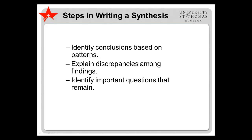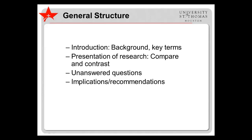In many cases, the research will be mixed — not all studies will show the same outcome, so you must be prepared to explain why this might be. Furthermore, you will need to identify some important questions that the literature raises. The general structure of a literature synthesis begins with an introduction that presents the research topic and question with some background information and definitions of key terms. Next, the research on the topic is presented with similarities and differences highlighted and explained.